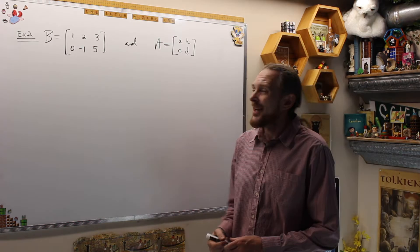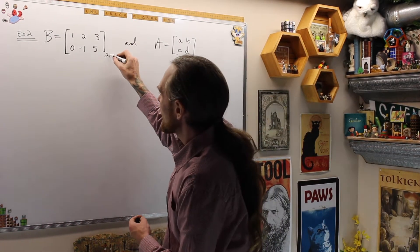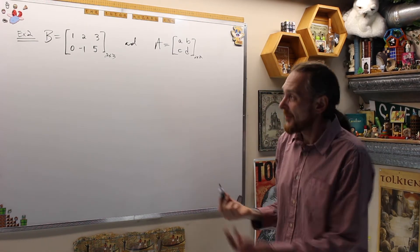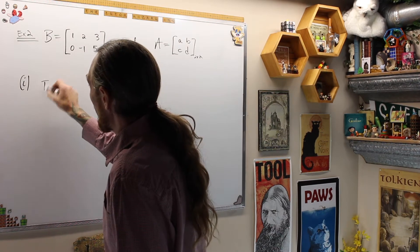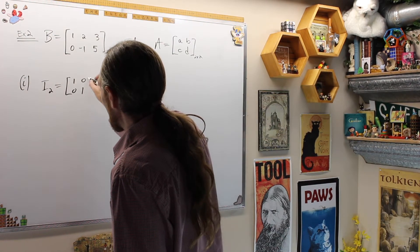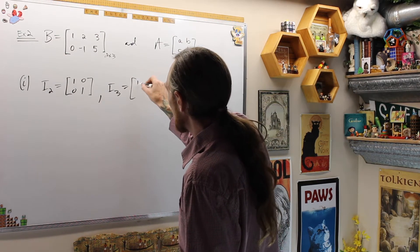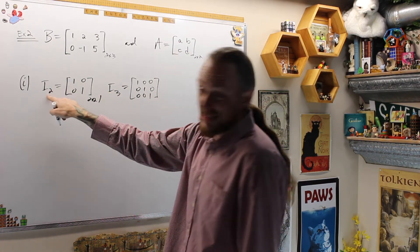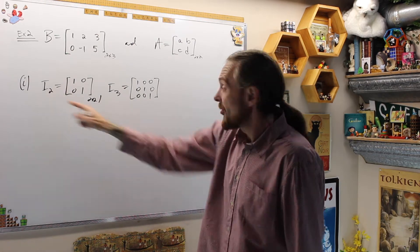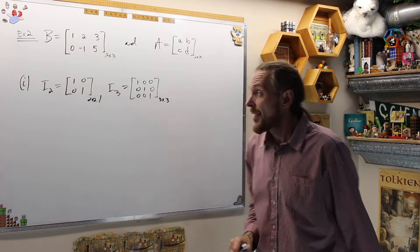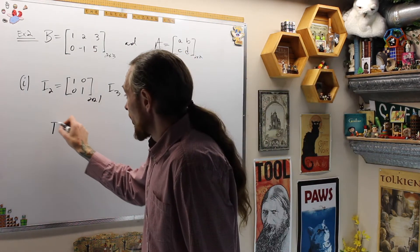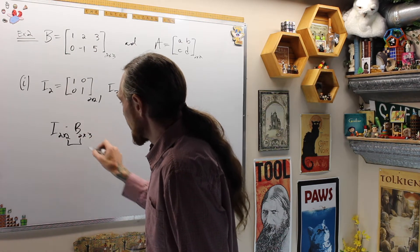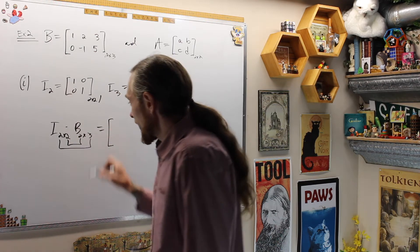Let's do an example of that. Example 2: let B be this 2 by 3 matrix, and let A be this 2 by 2 matrix. Let's see what happens with the identity matrix. We're going to look at I2, the 2 by 2 identity matrix, and I3, the 3 by 3 identity matrix. Our notation is lazy, but it's I_{2x2} and I_{3x3}. Because B is 2 by 3, we want to look at I_{2x2} times B_{2x3}. The inside indices match, and the outcome will be 2 by 3.